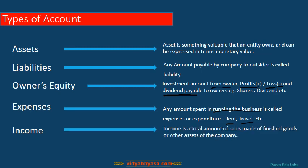Income is the total amount of sales made of finished goods or other assets of the company. Any amount received on account of sales made from finished goods or any other asset is treated as income. For example, if a company deals in plastic boxes, any sales from those boxes is income. If worn-out machinery is sold, that is also termed as income. These five account types are very critical for everyone to know.